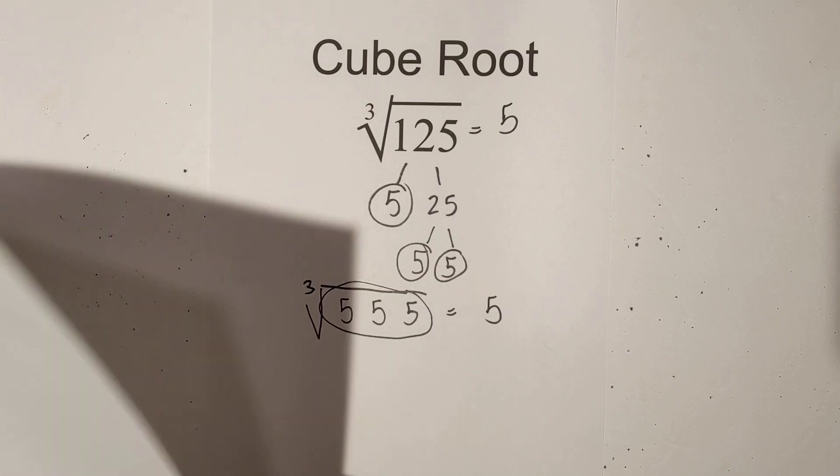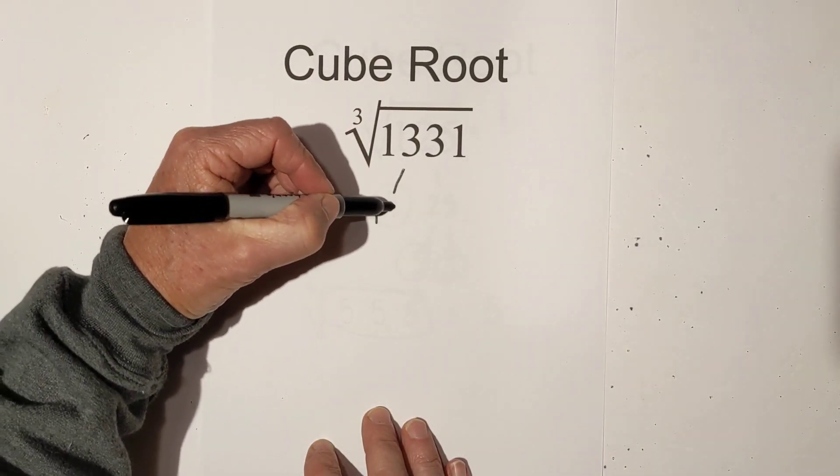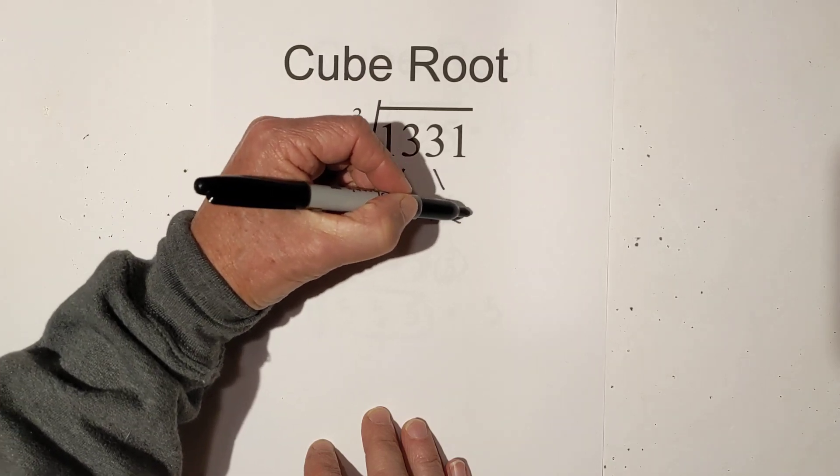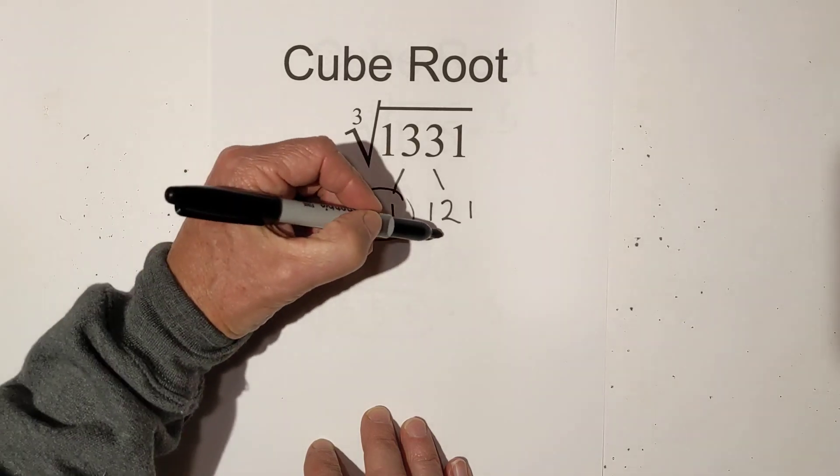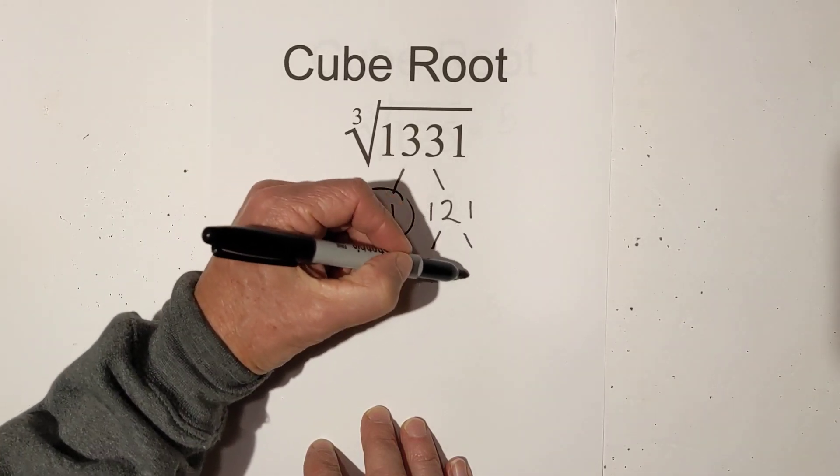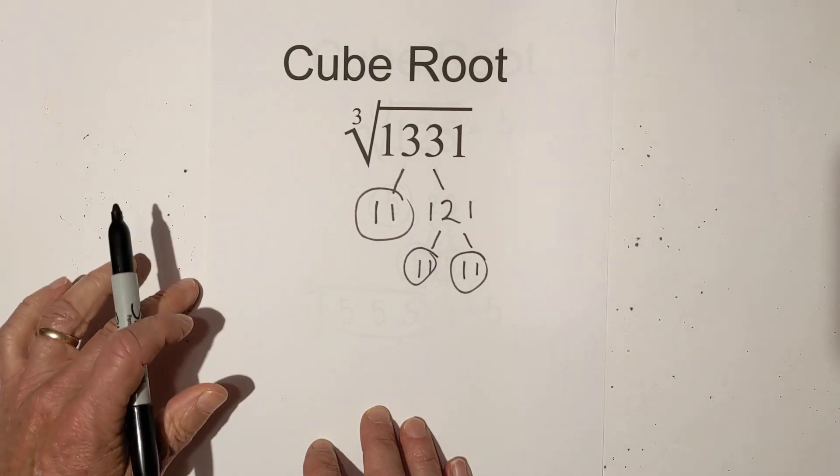Now let's look at 1331. Again, we'll start with a factor tree. 11 times 121 is 1331. Now let's go 11 times 11, circle these 11's because they are prime.